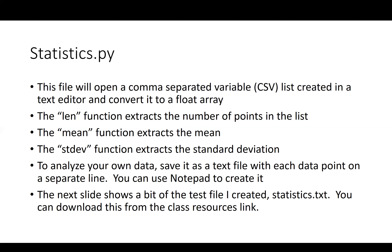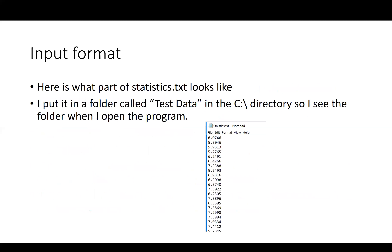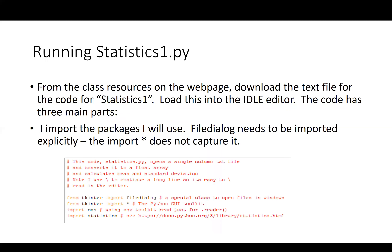So let's run through the program and take a look at what's in it. First, the Notepad file containing numbers — this is just a screenshot of the first few numbers in the file; there are quite a few numbers in it. What I did was create this array of numbers, save them into Notepad, and put it in a folder I called test data. To make life simple, I put it in the main C directory on my Windows 10 tablet, and when I opened the Windows file browser, I pointed at the C directory so I can see test data right away.